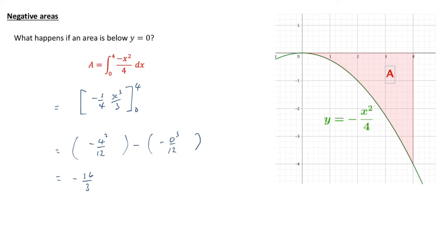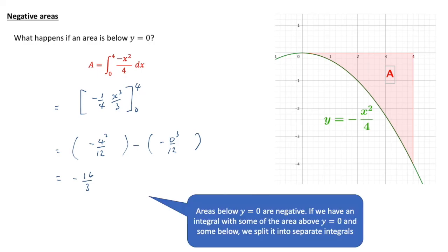What that's telling us is the areas below the x-axis are negative. And if we have an integral with some of the area above y equals 0 or the x-axis and some below, then if we just want the absolute area in that case, we need to split it into separate integrals. In fact, the fact that integrals are negative below the x-axis is very useful when we're using functions to model real situations.